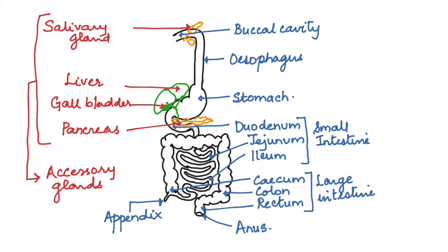All the other parts—that is, the buccal cavity, the esophagus, stomach, small intestine, and large intestine—form the alimentary canal. That is the parts through which the food passes and it receives secretions from the accessory glands.